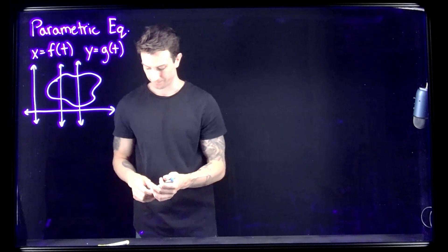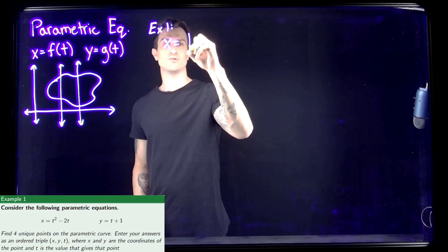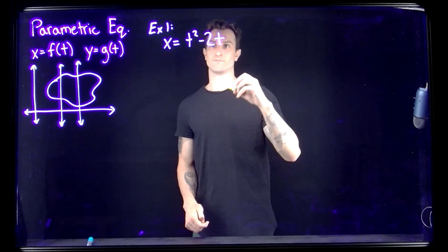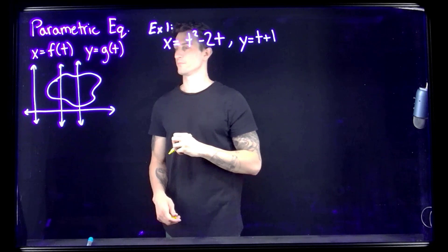Alright, so for Example 1, we're going to take two equations. We'll say x is equal to t squared minus 2t, and y is equal to t plus 1.